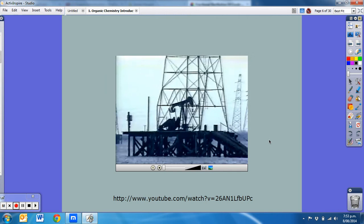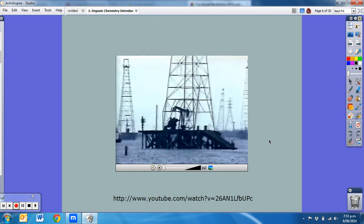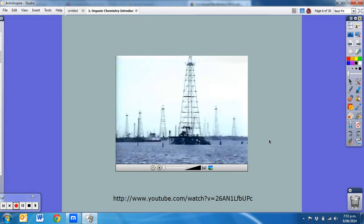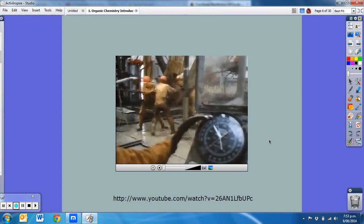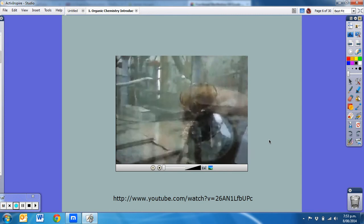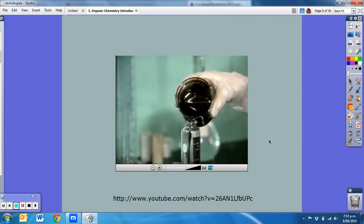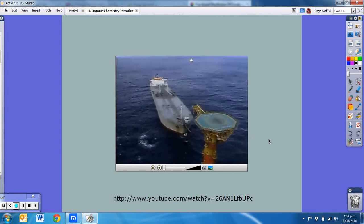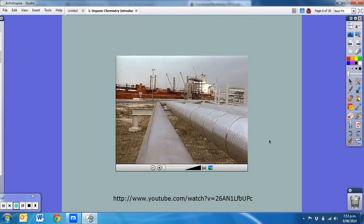Oil is formed deep in the ground from the effects of long-term heat and pressure on ancient plant and animal remains. The oil is either pumped to the surface or rises to the surface under its own pressure. This crude oil is a mixture of many different hydrocarbons. It is shipped to the refinery by tanker or pumped locally by pipe.